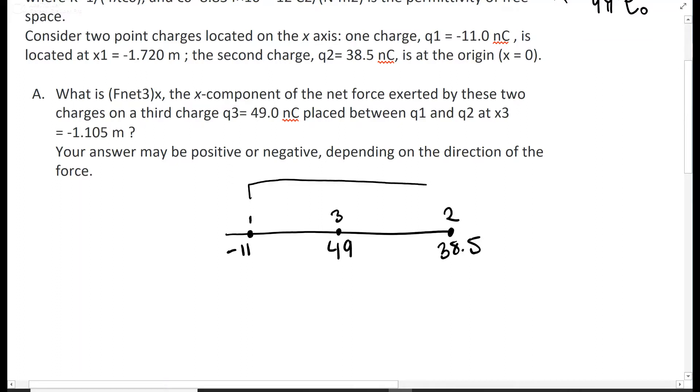So we know that the distance from 1 to 2 is 1.72 meters, and the distance from 2 to 3 is 1.105 meters. Obviously we're moving in the negative direction, but distance as a whole is just the value. So here we have a negative charge here and a positive charge here.